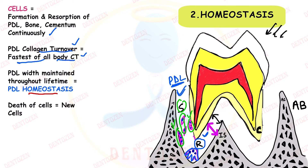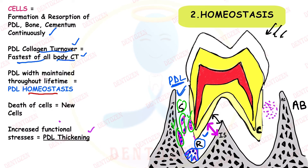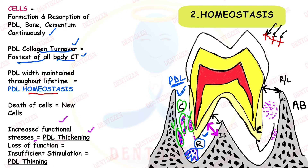If there are heavy forces on the tooth, the PDL will thicken in that area — this is called periodontal thickening. Increased functional stress causes thickening of the PDL space, which can be seen on a radiograph as a widened radiolucent area. Conversely, if teeth are not being used, the PDL will thin. Loss of function or insufficient stimulation causes PDL thinning, seen on radiograph as a reduction in this space.